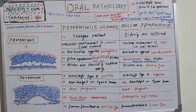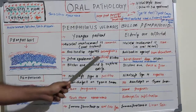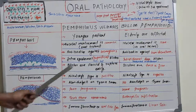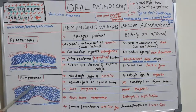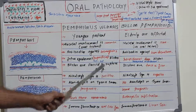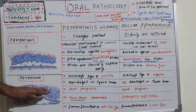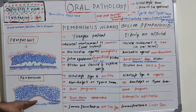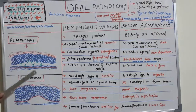So pemphigus has intra-epidermal, superficial blisters, while pemphigoid has sub-epidermal, deep blisters underneath the epidermis. Because pemphigus blisters are superficial, they are flaccid and rupture very easily. Pemphigoid blisters are tense and firm because they have a thick layer of epidermis over the blister, whereas in pemphigus that overlying layer is not thick, so blisters are easily rupturable.